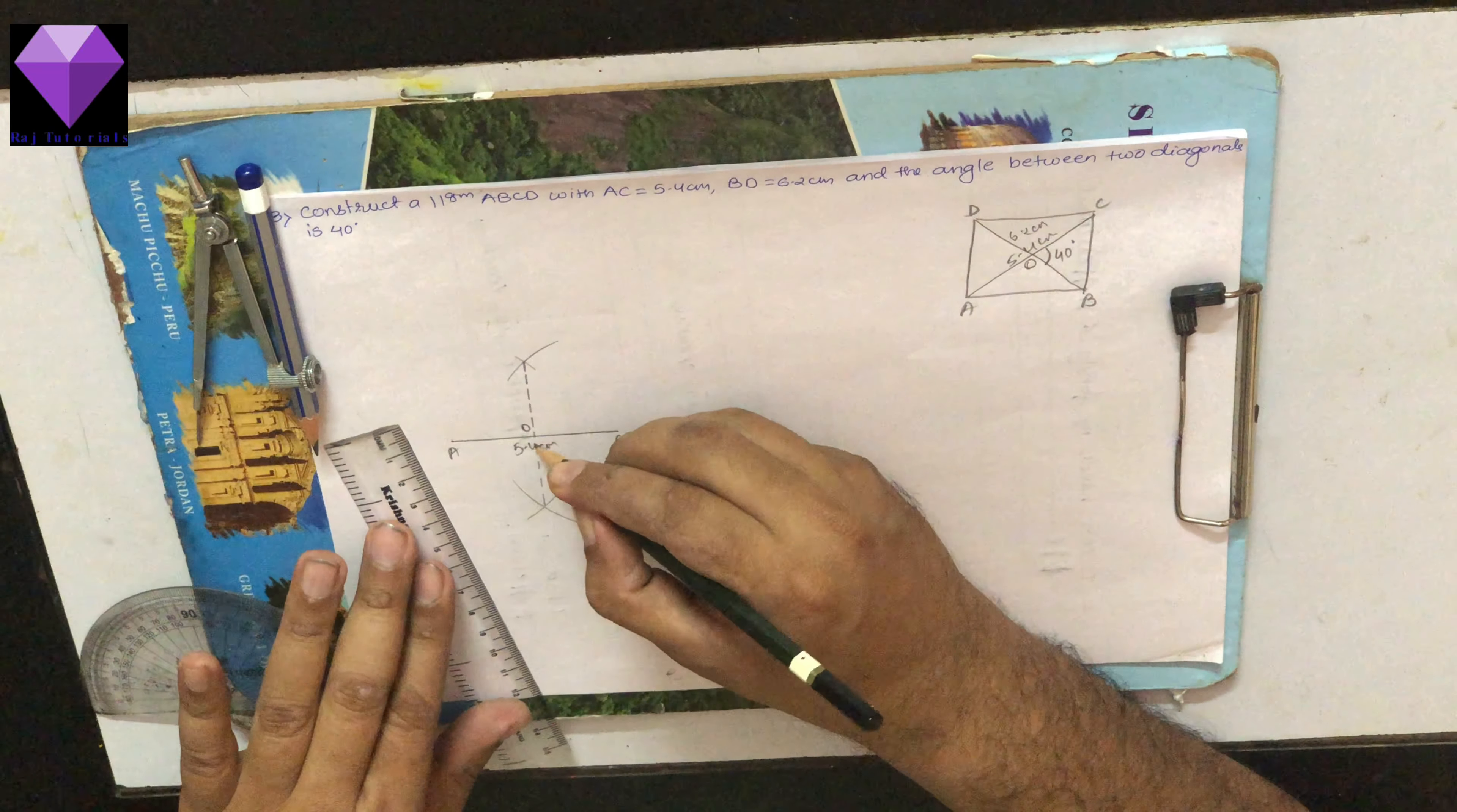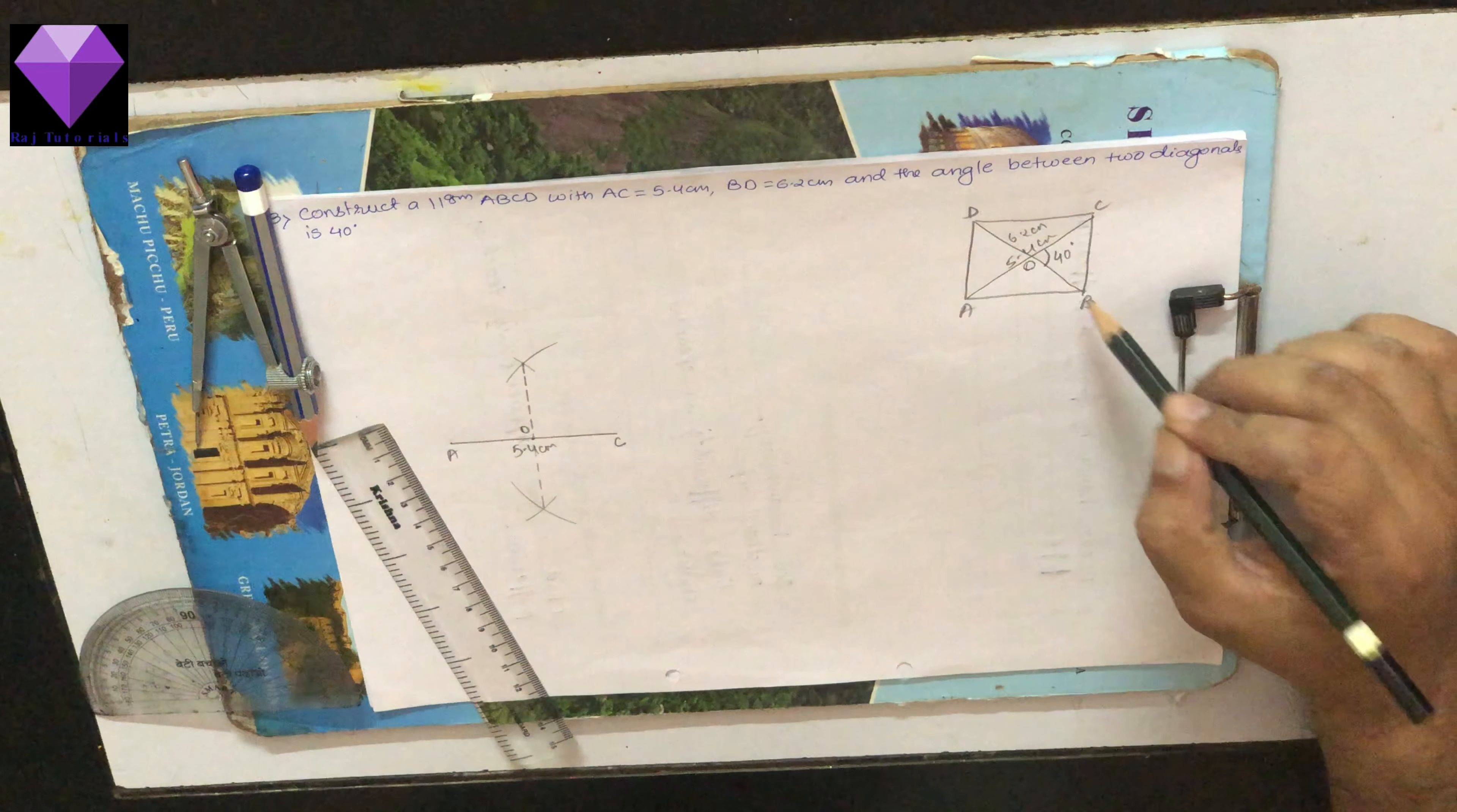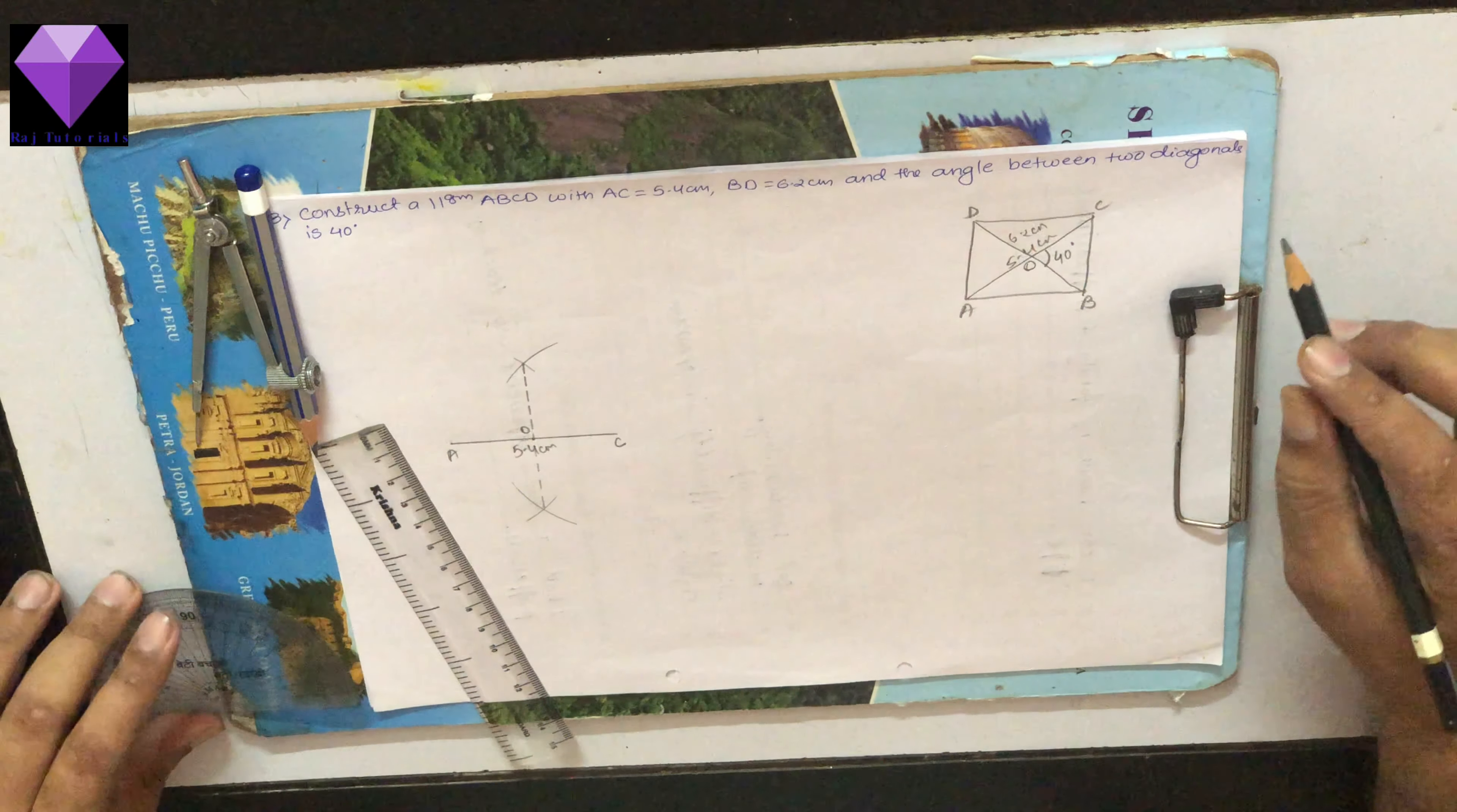So this point is my O point. Now the other diagonal is given 6.4 cm but the angle is given 40 degrees.